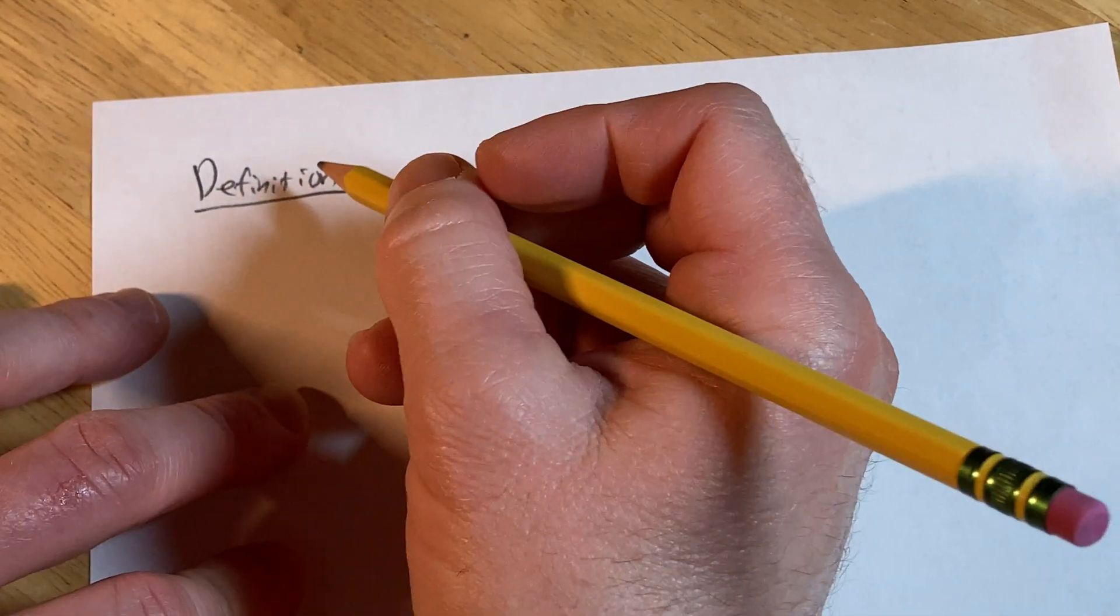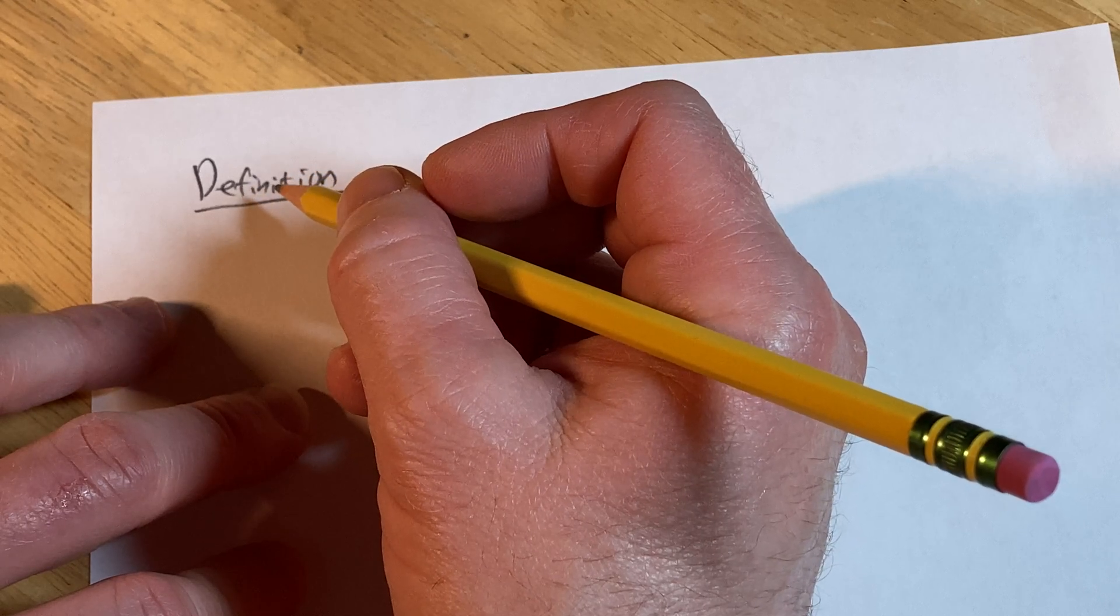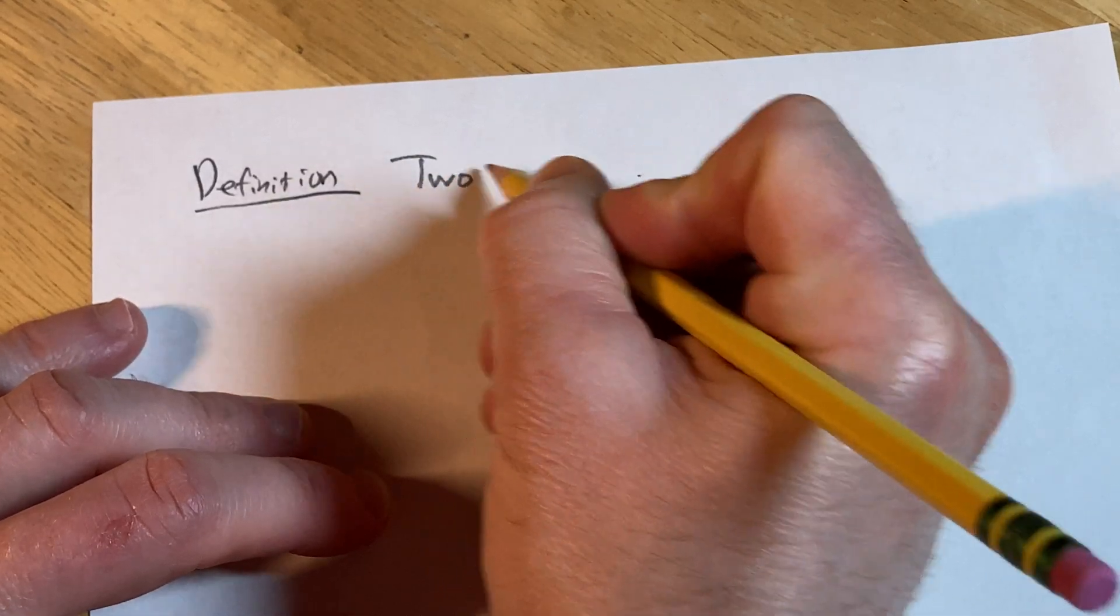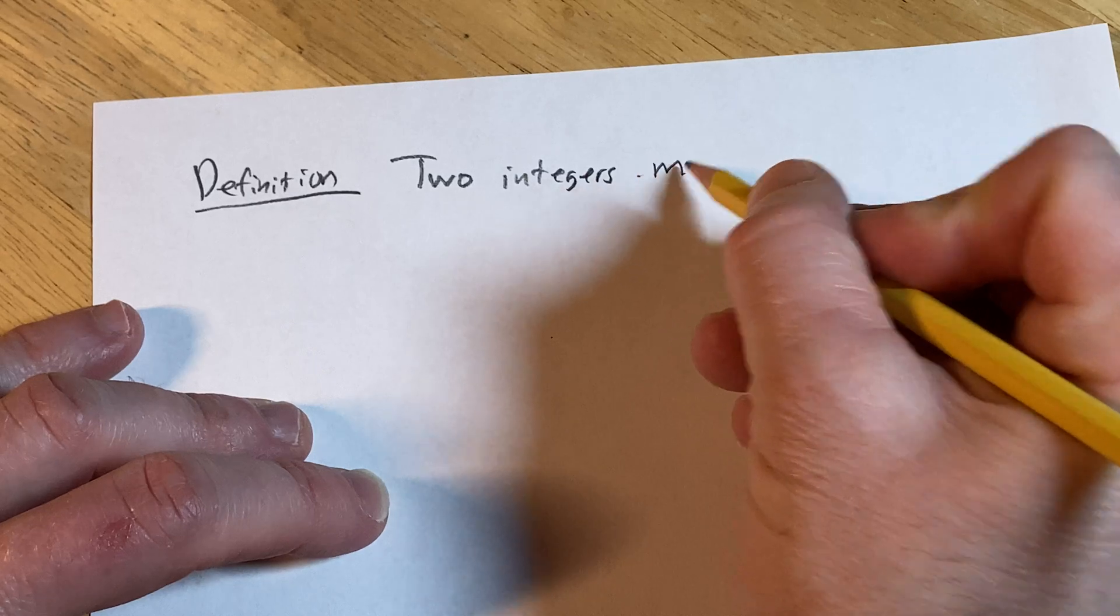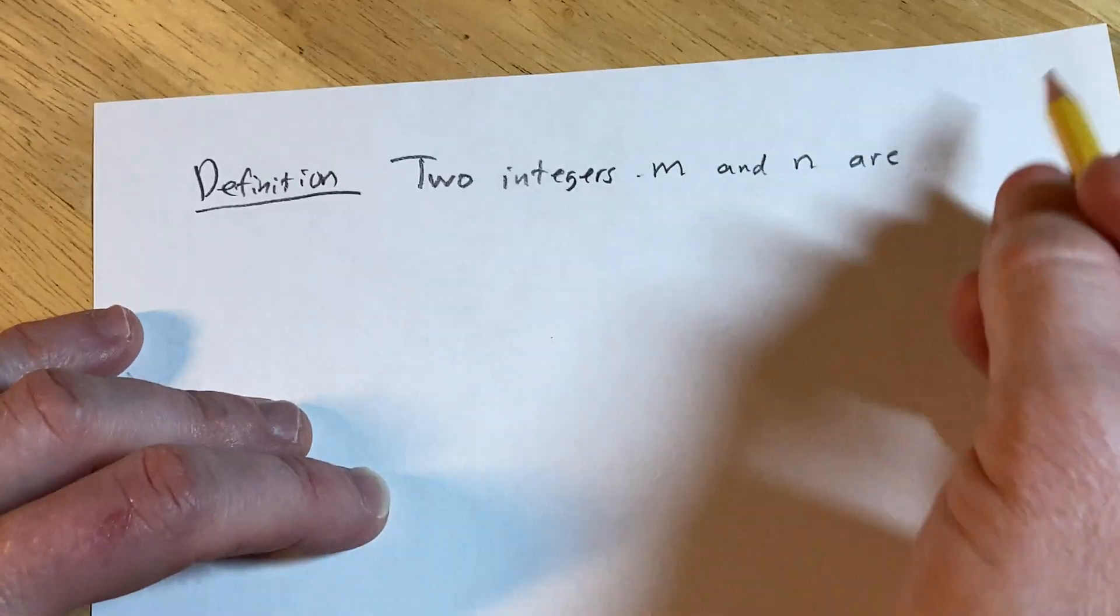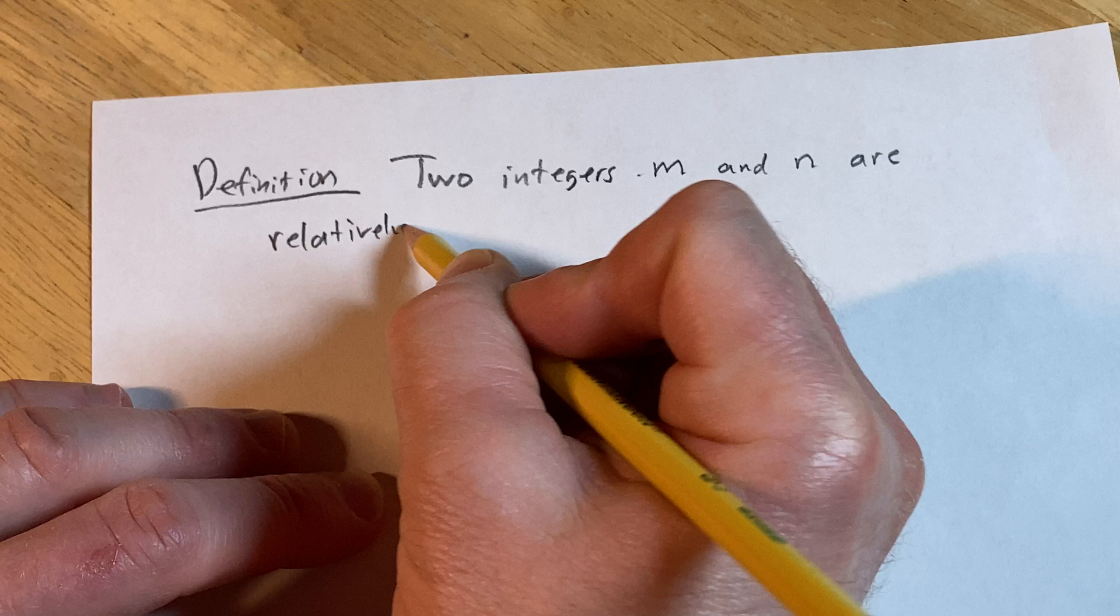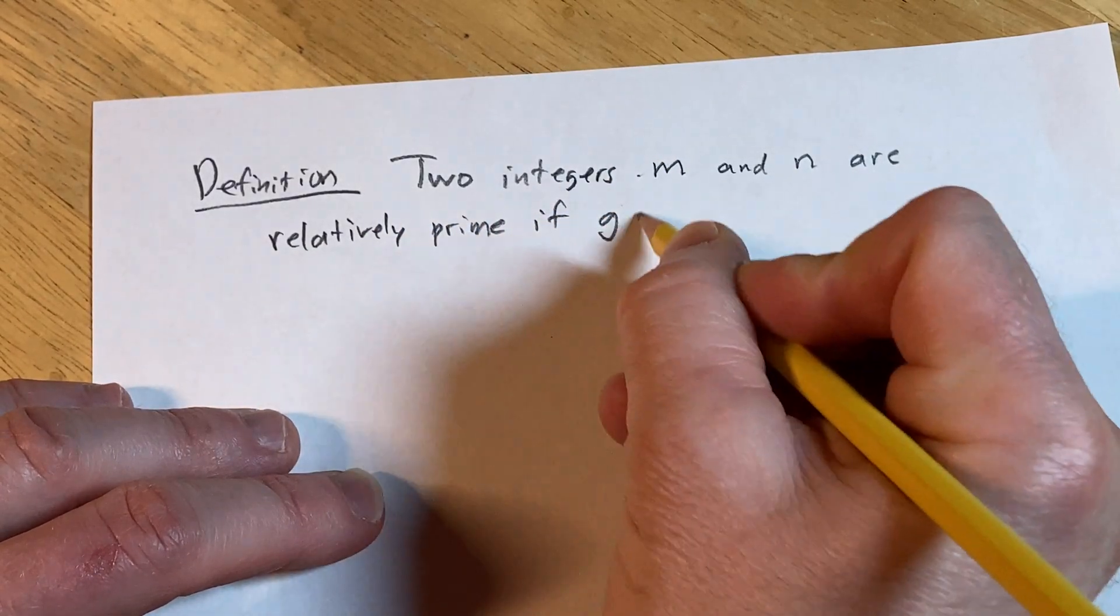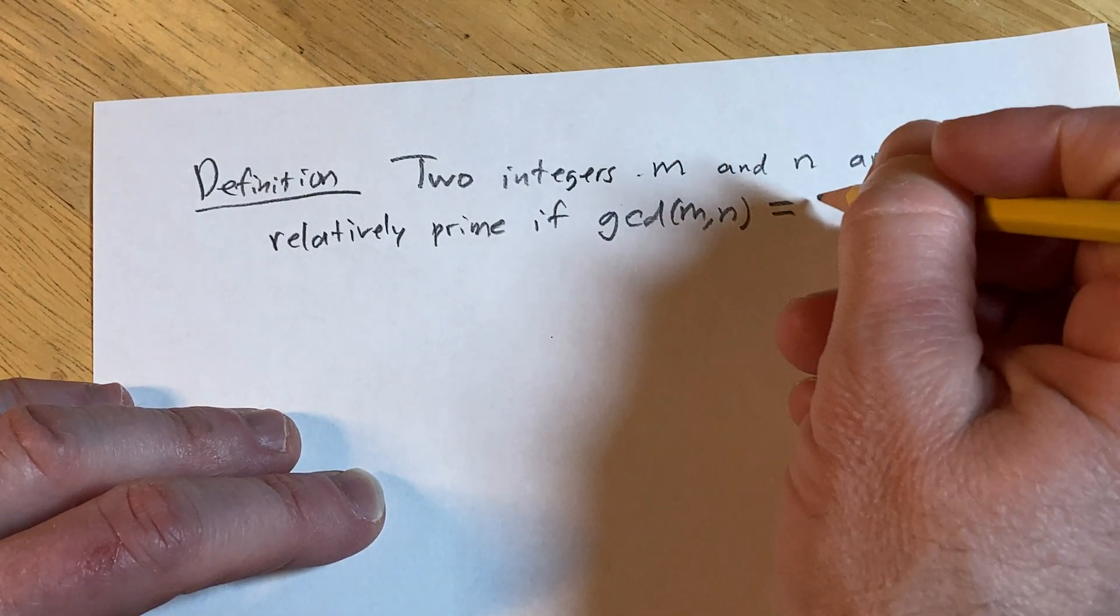We are going to define what it means for two integers, m and n, to be relatively prime. Two integers m and n are relatively prime if the GCD, the greatest common divisor of m and n, is equal to 1.